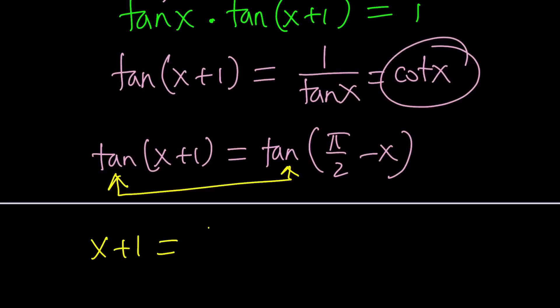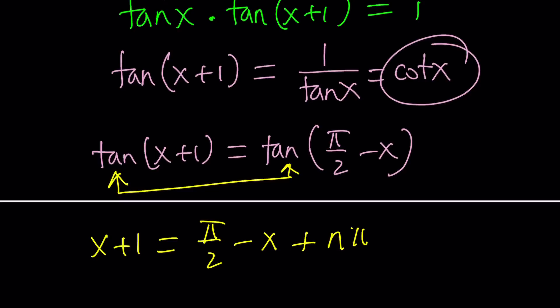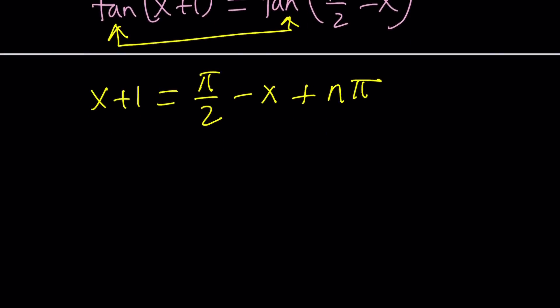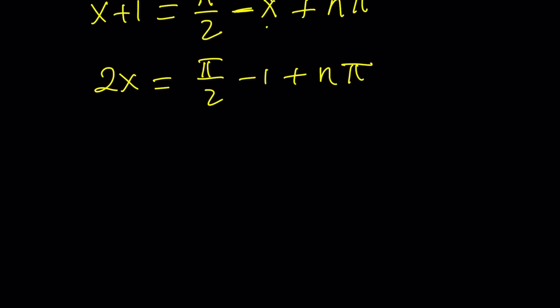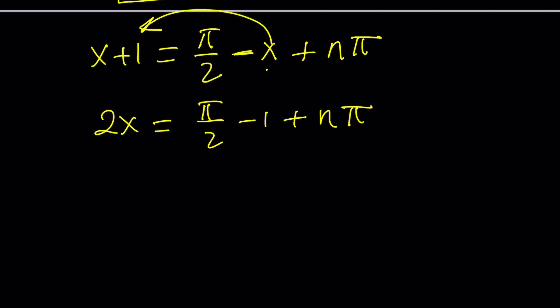Think about x and pi over 2 minus x. Their sum is pi over 2 radians or 90 degrees. Which means, tangent of one of the angles is equal to the cotangent of the other angle. Which is awesome, because we do have now tangent on both sides, which you can arctangent. And then that'll give you x plus 1 equals pi over 2 minus x plus n pi. The period for tangent function is pi. So, we're going to add n pi. The next thing we're going to do is bring the x's together first. I'm going to add x to both sides, and then subtract 1.